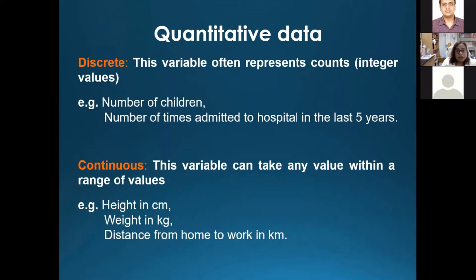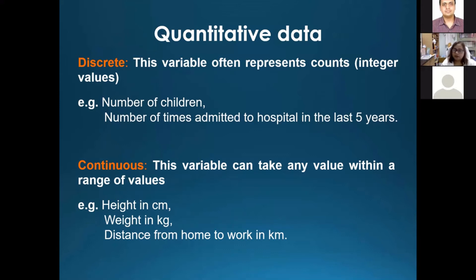In quantitative data, we can have discrete and continuous data. Discrete data represents counts or integer values — like number of children can be one, two, three, but cannot be 1.5 or 2.5. Continuous quantitative data is a variable that can take any value within a range — like height in centimeters can be 154.5 or 154.2 centimeters. So you need to identify whether your data is quantitative or qualitative before proceeding with sample size calculation and further analysis.